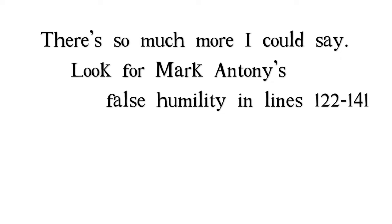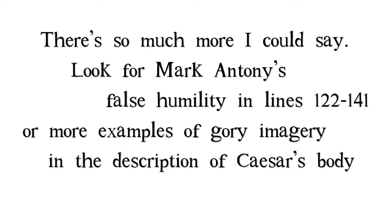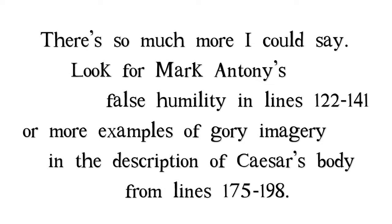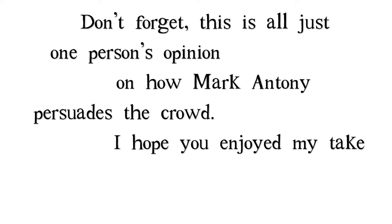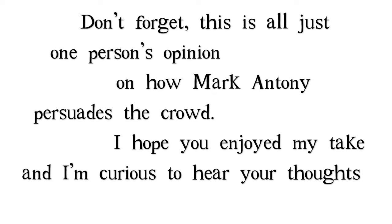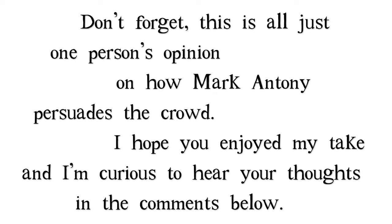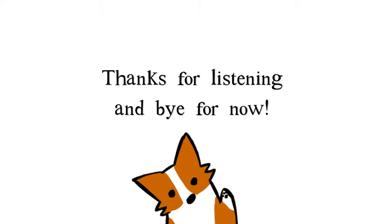So let's review the seven different ways Mark Antony convinces the Roman people that Caesar's death was unjustified: he takes a gentle approach; he repeats the words 'honorable' and 'ambitious'; he provides examples of Caesar's good character; he uses rhetorical questions; he makes the Romans feel guilty; he teases Caesar's will; and finally, he humanizes Caesar and brutally describes his dead body. There's so much more to explore — look for Mark Antony's false humility in lines 122 to 141, or more examples of gory imagery in lines 175 to 198. Don't forget, this is all just one person's opinion — I hope you enjoyed my take, and I'm curious to hear your thoughts in the comments below. Thanks for listening, and bye for now.